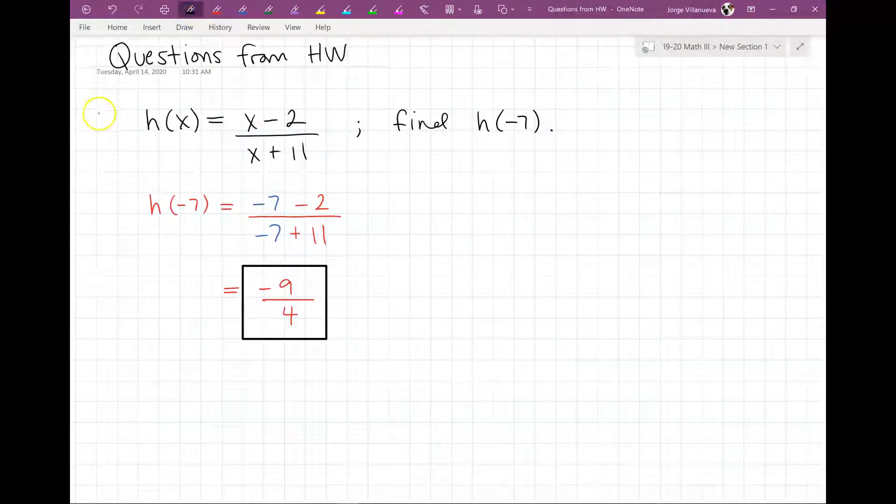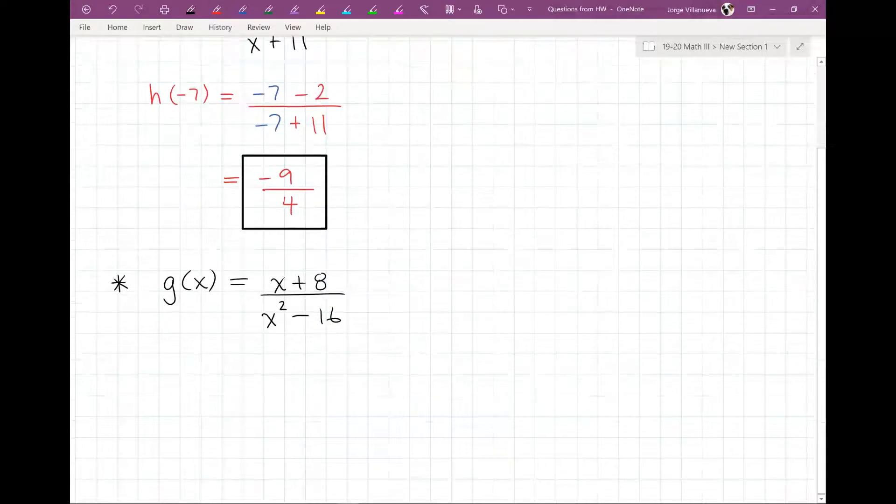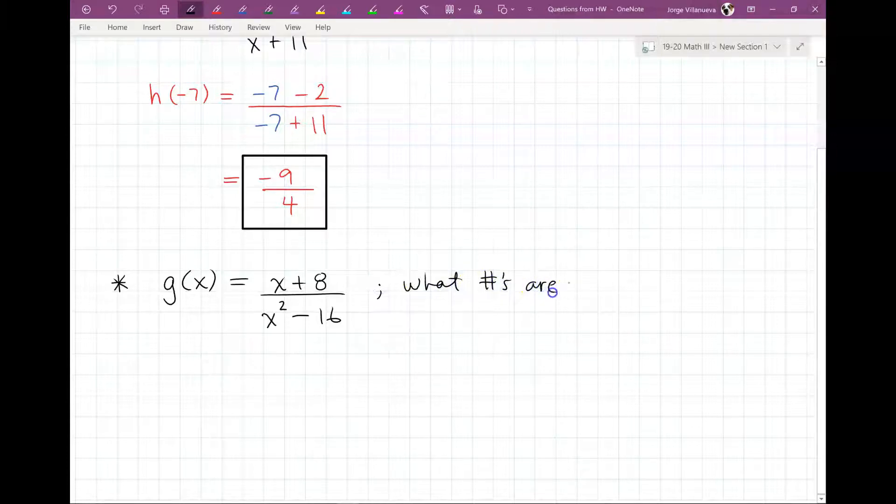That was one question. And then the other question that was asked of me started like this. They give you g(x) and they say we have that equal to x plus 8 over x squared minus 16. And they said what numbers are not in the domain.